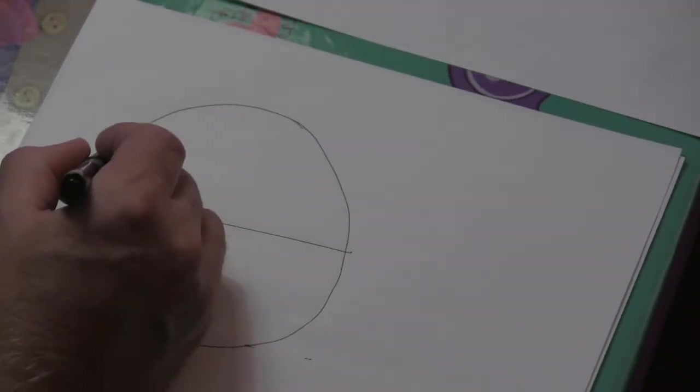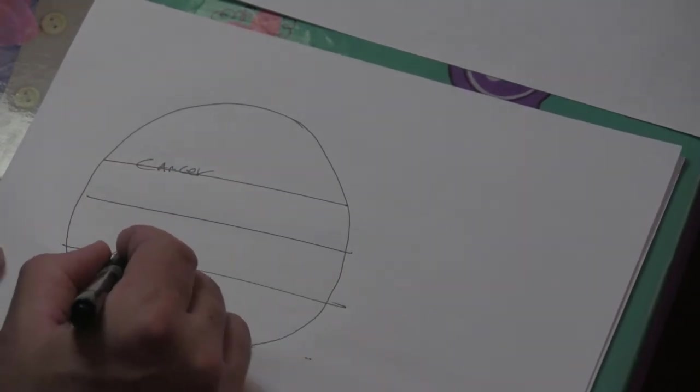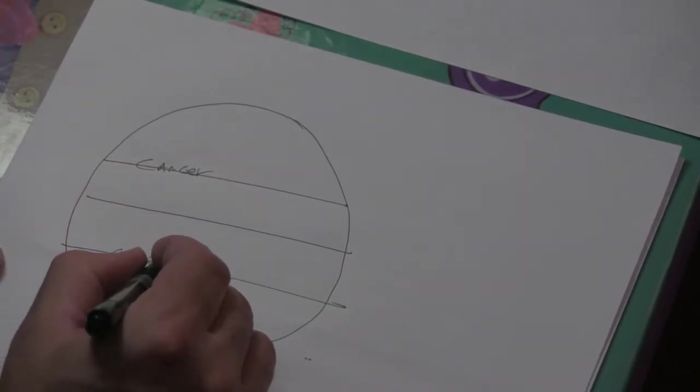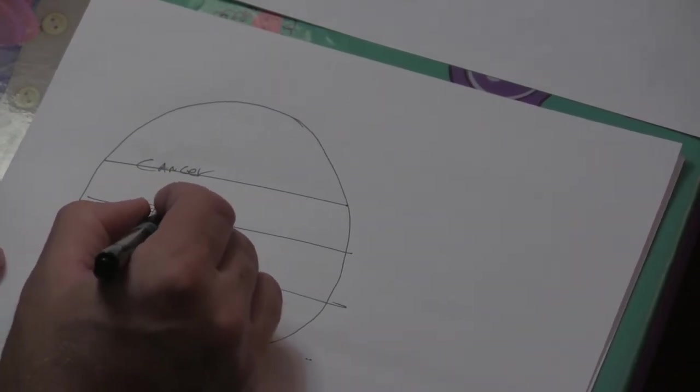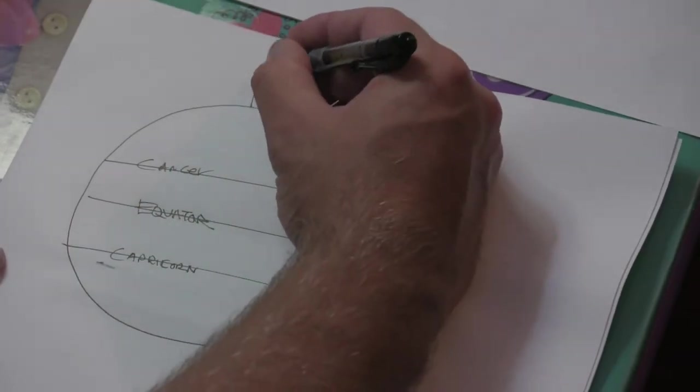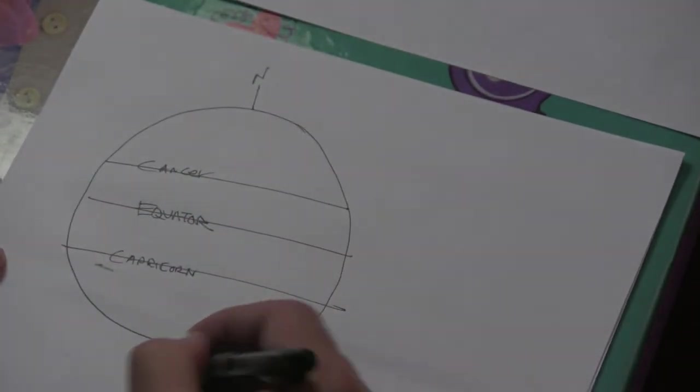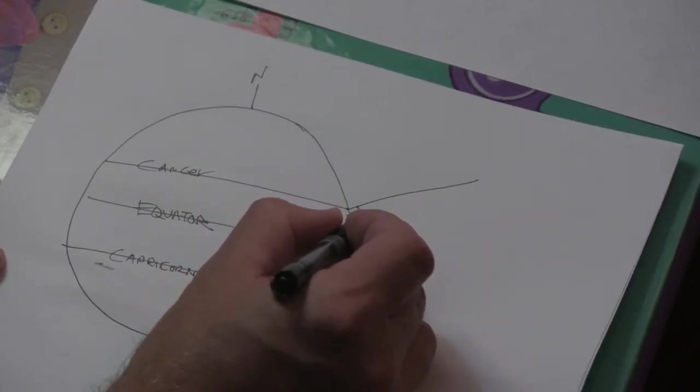Cancer, Capricorn, Equator, North, South. Perpendicular, 90 degrees.